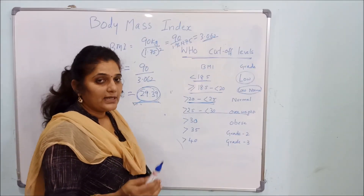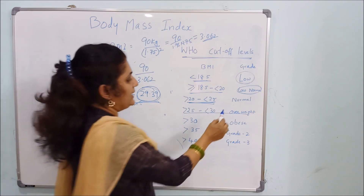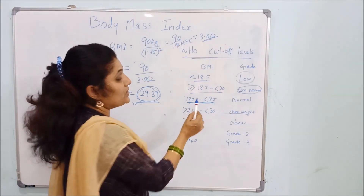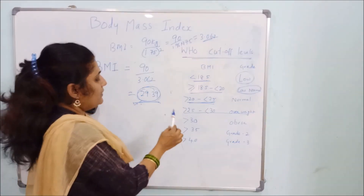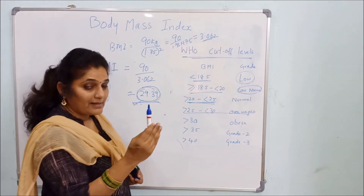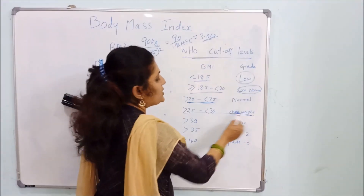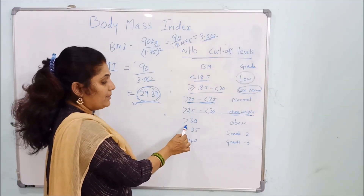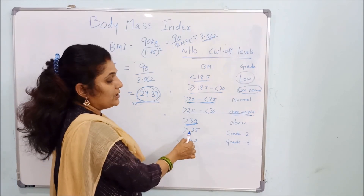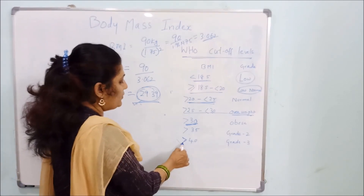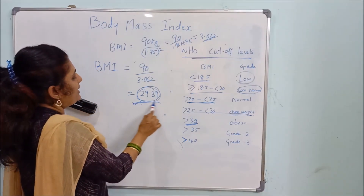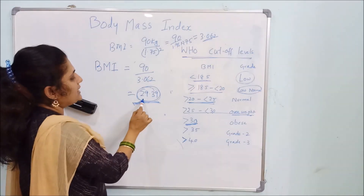If your BMI is between 20 and 25, you are normal — your weight is appropriate to your height. Normally our BMI should be between 20 and 25. If your BMI is greater than 25 and less than 30, you are considered overweight. If your BMI is greater than 30, you are obese; greater than 35 is grade 2 obesity, and greater than 40 is grade 3 obesity.